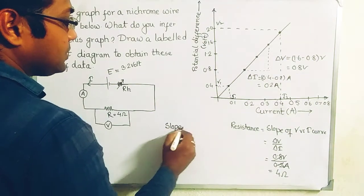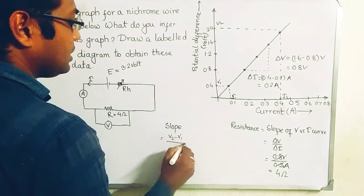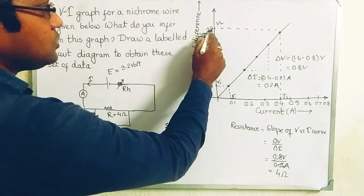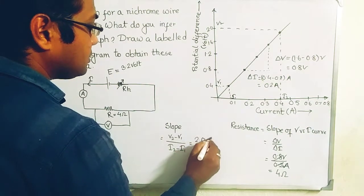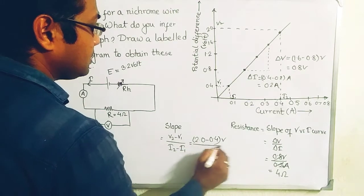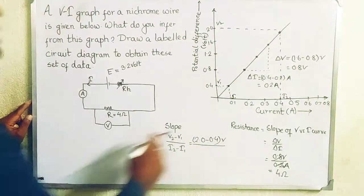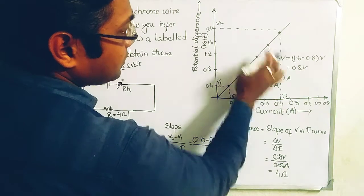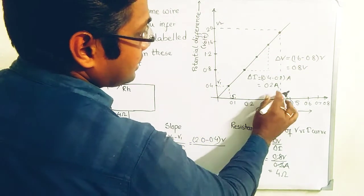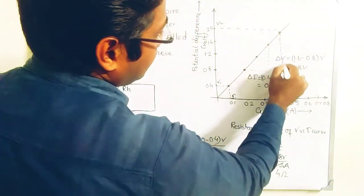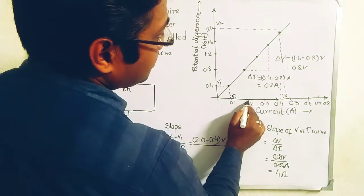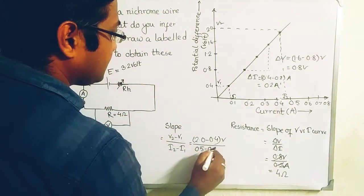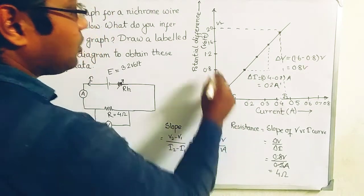It will give the same value. Let us check it out. The slope is V2 minus V1 divided by I2 minus I1. What is V2 minus V1? It is 2.0 minus 0.4 volt. Obviously it is calculated in volt. And the current is 0.4 for 0.4. It is slightly deviated I think. So it will be for 0.1, 0.2, 0.3, 0.4, 0.5. This is for 0.5. So 0.5 minus 0.1 ampere.